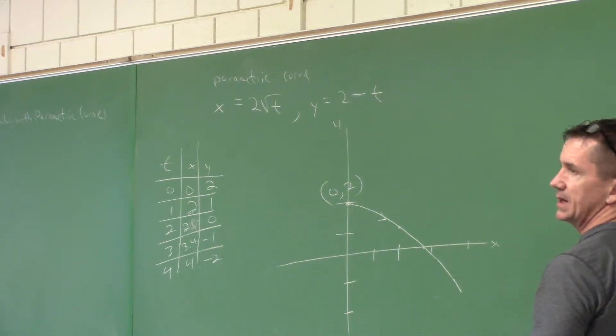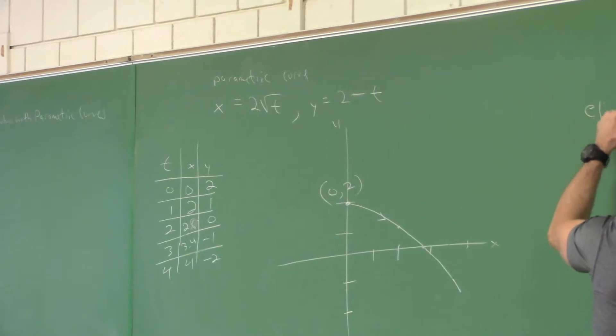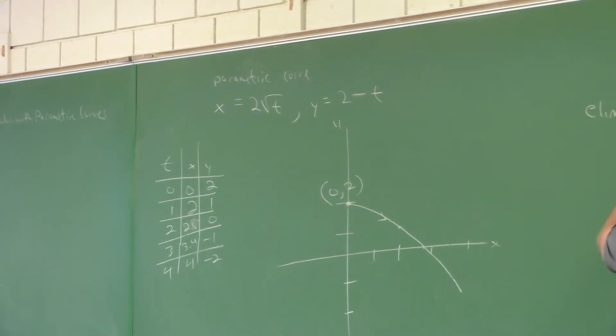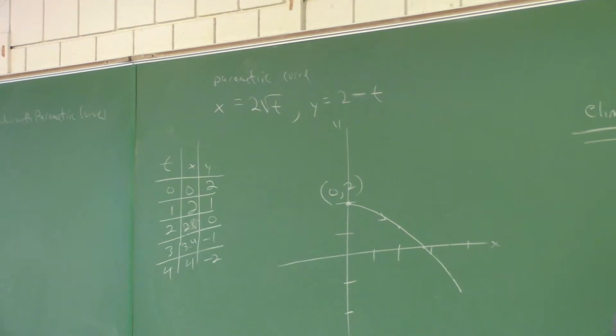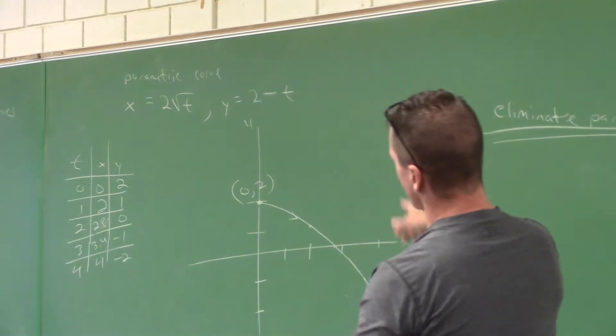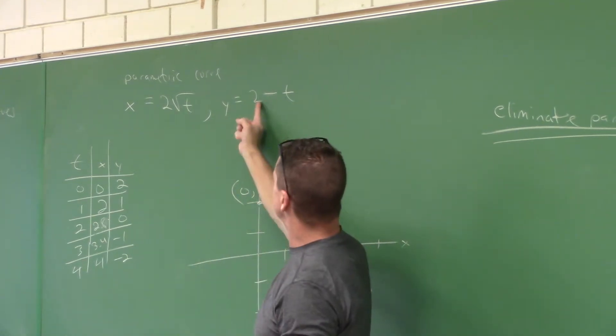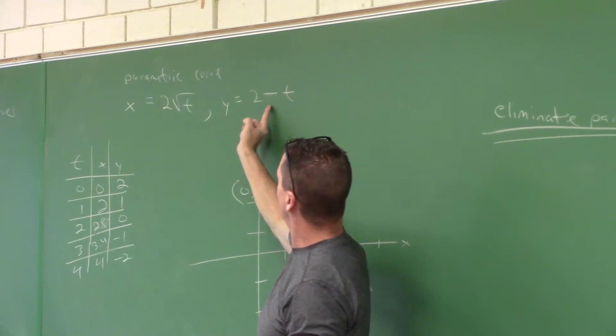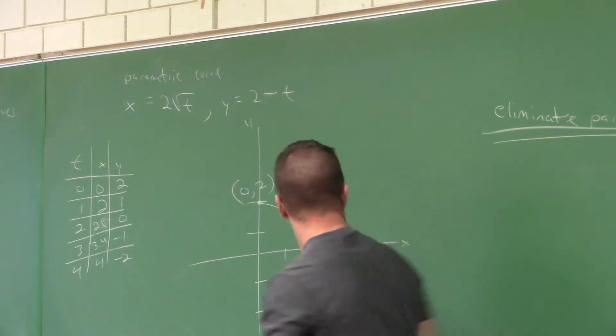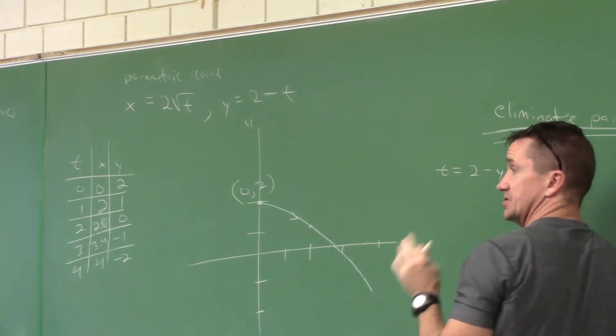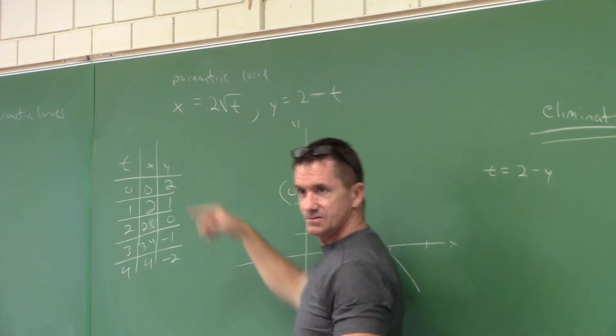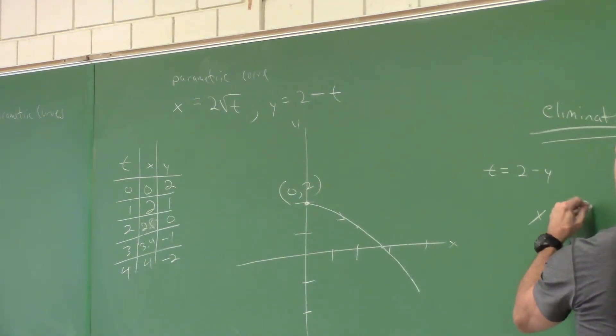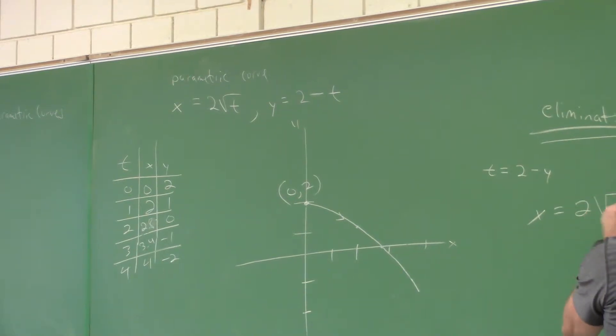I'm curious, if you wanted to, could you eliminate the parameter? That means get rid of t. T is the parameter. That's why they call these parametric equations. We'd have to do some substitution, so I'll let you all be creative. What could you substitute? Could you solve for t in one of these? And pick the one that's easier. I think that's easier. What would t equal? Two minus y. t would equal two minus y. I'll make another t equals two minus y in this relationship, right? And then I'll take this two minus y and substitute it into this equation.